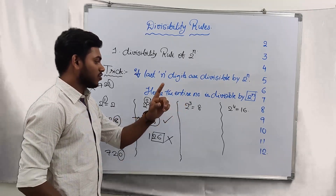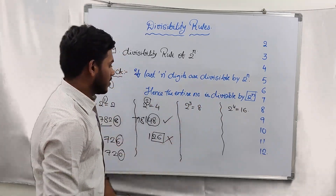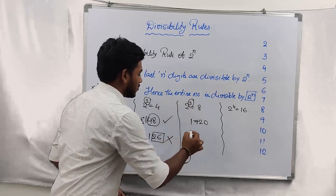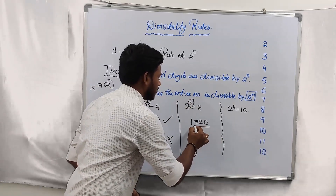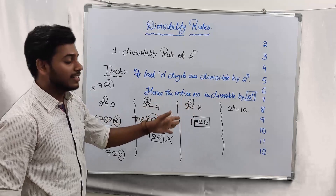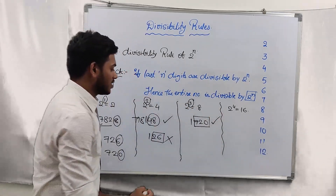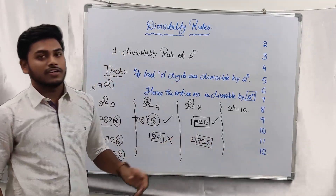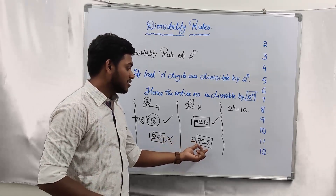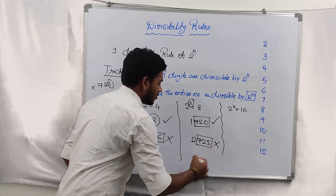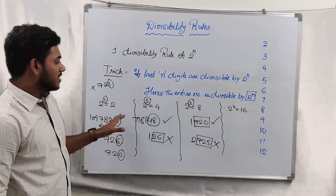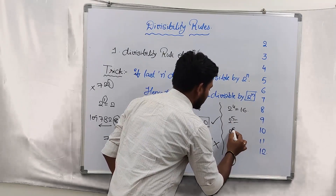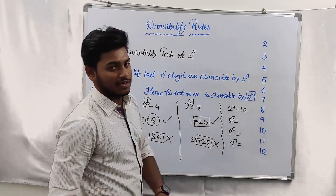In the similar way, this also works for 8 and 16 as well. For 8 (2^3), n value is 3, so the last three digits matter. For example, 1720 — the last three digits are 720, and 720 is divisible by 8, so the entire number is also divisible by 8. If you consider 2725, the last three digits are 725, which are not divisible by 8, hence this number is not divisible by 8. This rule is also applicable for 16, 2^5, 2^6, 2^7, and any similar number.